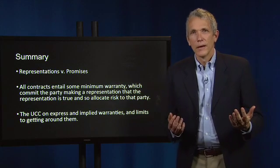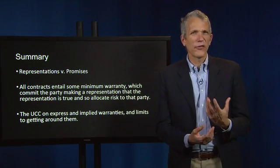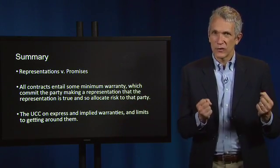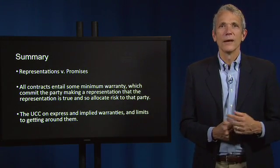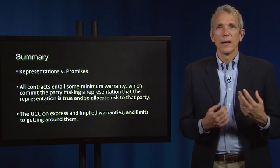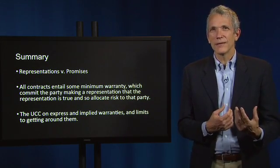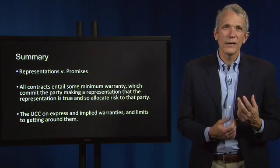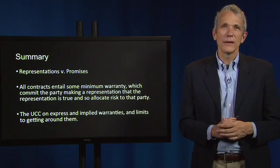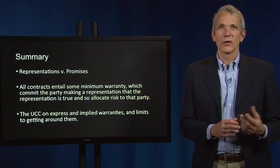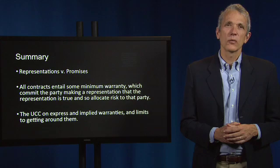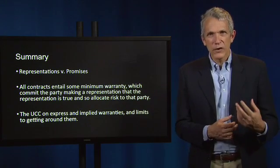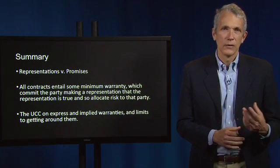So what have we learned? We've learned about the important role of representations of fact in contract law, and we won't forget that representations of fact are distinct from promises. We've learned that representations in contracts throw off implied warranties, and that because all contracts must contain some representations, all contracts entail some kinds of at least implied warranties. We've learned these warranties allocate risk to the representing party, so sellers can be liable when their representations turn out to be false. We talked about the express warranties and implied warranties that the UCC sets out and about the UCC's altering rules — the provisions that limit the ways to contract around those default rules.